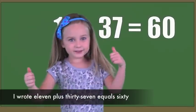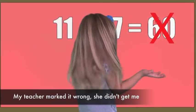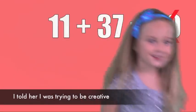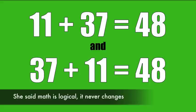I wrote 11 plus 37 equals 60. My teacher marked it wrong, she didn't get me. I told her I was trying to be creative. She said math is logical, it never changes. 11 plus 37 equals 48.